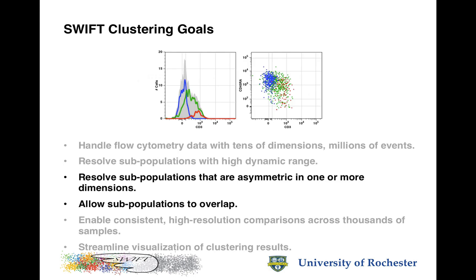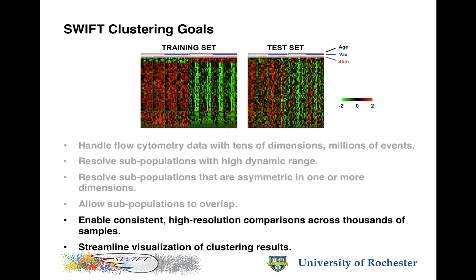We also wanted to be able to resolve subpopulations that are asymmetric in one or more dimensions, and that example is shown here. We wanted to allow subpopulations to overlap because that probably reflects the biology very well. And we also wanted to be able to compare large numbers of samples with each other and to visualize these clustering results in a very streamlined way.